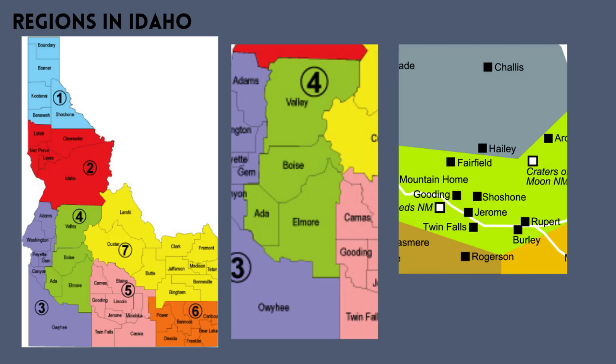On to south central Region 4, which encompasses Twin Falls, Hagerman, and Burley areas. This region has 210 sunny days per year, 10 inches of rain per year, 78.5 days of precipitation per year, an average July high of 89.3 degrees, an average January low of 20 degrees, and on average 17 inches of snowfall per year.